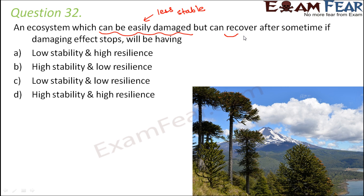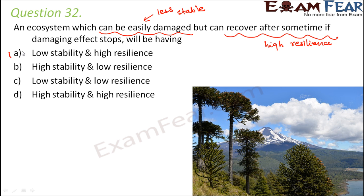The ecosystem can recover after some time once the damaging effect stops — meaning it has the ability to regain its original position after being deformed, which indicates high resilience. Resilience means the ability to come back to the original position after being deformed. So this ecosystem has low stability but high resilience, making option A the correct answer.